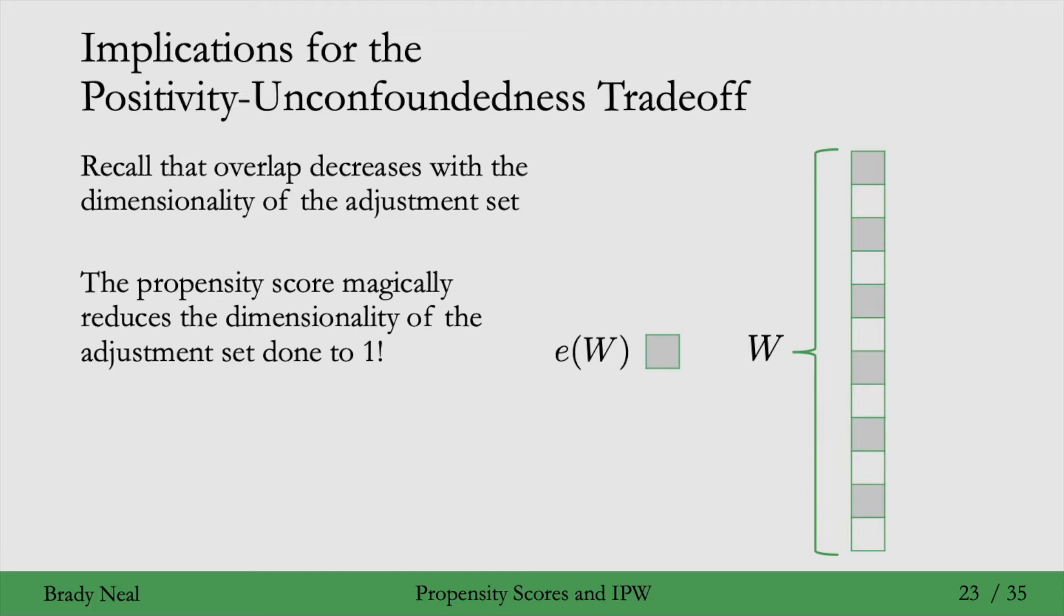The propensity score is a bit magical in that it takes this high-dimensional W and reduces it to just a single dimension. Now, if we condition on just this scalar, we're much less likely to have overlap violations because it's only one-dimensional.